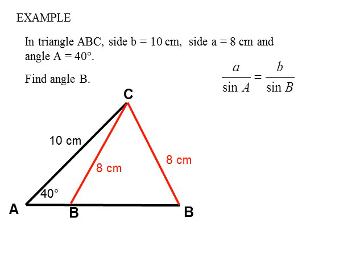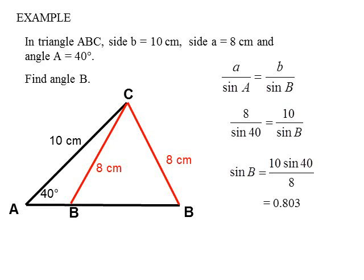Using our sine rule: 8 over sine 40 equals 10 over sine B. Rearranging, sine B equals 10 sine 40 over 8, so B equals the inverse sine of 0.803, which is 53.5 degrees.